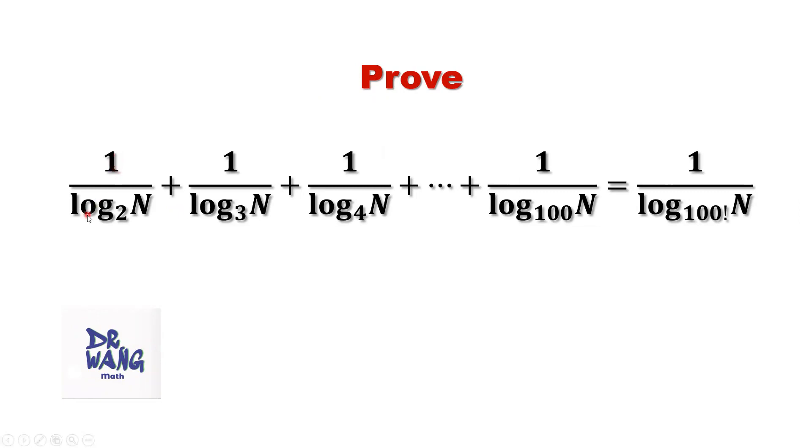Prove: 1 over log of n to the base 2, plus 1 over log of n to the base 3, plus 1 over log of n to the base 4, plus ... plus 1 over log of n to the base 100, equals 1 over log of n to the base of 100 factorial. How to prove this identity?